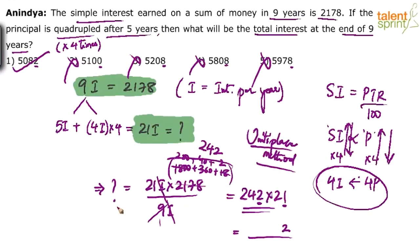There could be a possibility that multiple options end in 2, in which case you'd have to do the exact calculation. But in this case the unit digit method saves time. This is called the smart method. Doing 242 × 21 on paper or without paper is not smart. What is smart is understanding that the unit digit method immediately cancels four options, and this should happen in a couple of seconds. You just have to practice, especially on numbers.